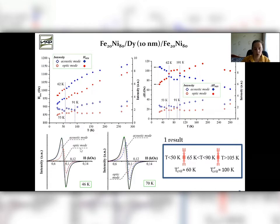The measurements were carried out in the temperature range from 7 to 300 Kelvin. The temperature dependence of resonance fields, line width, and intensity of acoustic and optic modes demonstrates a change of curve trend at a temperature of about 60 Kelvin. We suppose the observed effects were caused by a change of the magnetic state of dysprosium.